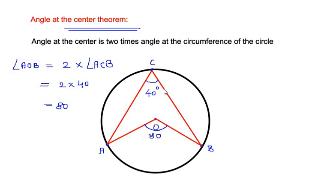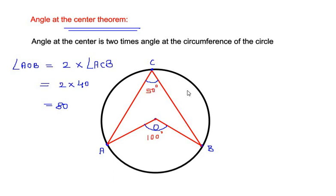The vice versa is also possible: if the angle at the center is 100 degrees, then at the circumference it is half of 100, which is 50 degrees. We are going to use this theorem to solve the example.